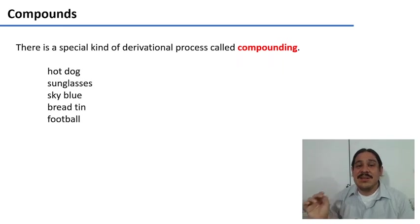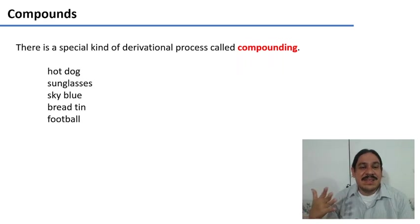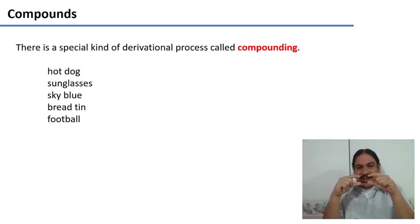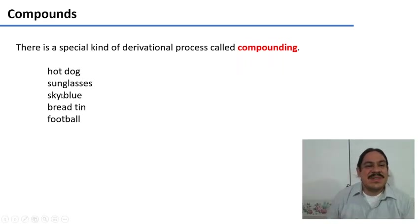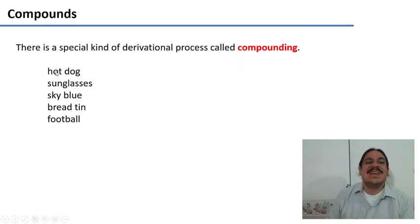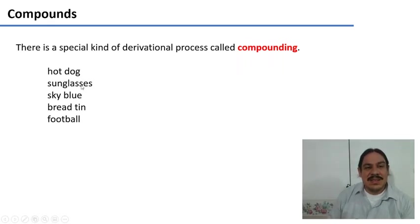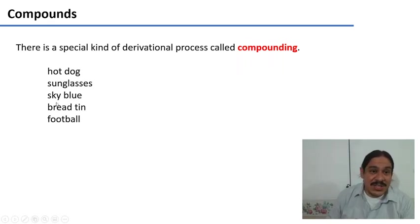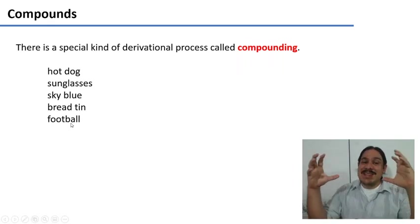We're going to look at a specific kind of derivational process called compounding — creating compounds. We say it's derivational because we take two words and the combination means something else. For example, a hot dog is not a dog, and it is not necessarily something that's hot — you can have a cold hot dog. Sunglasses are a specific kind of glasses, sky blue is a specific kind of blue, bread tin is only a specific kind of tin, and a football is a specific kind of ball.